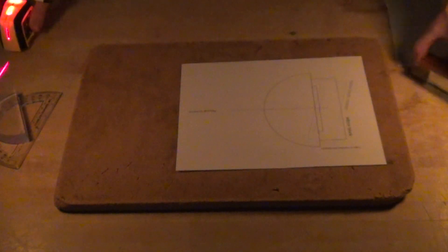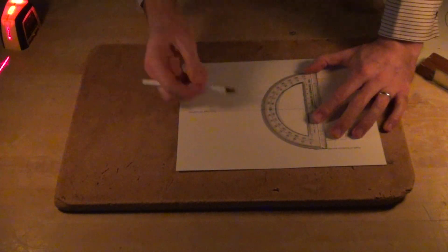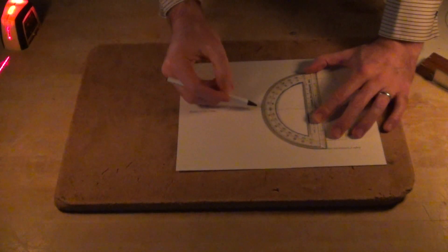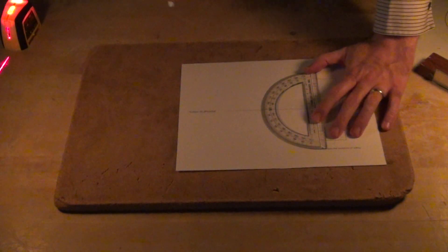And then once you've marked those two points, you can measure with a protractor the angle from the normal that those two points are at, and see if they're at the same angle.